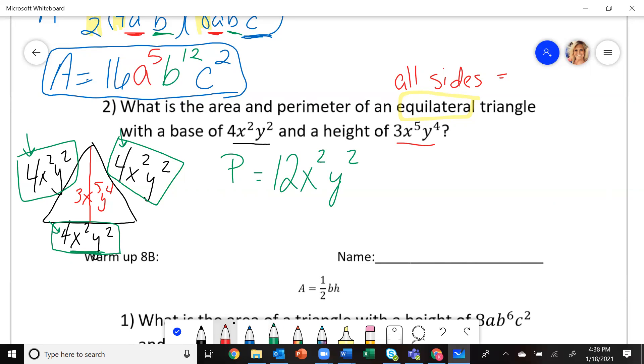Now, this is different than your area, because remember, like the one we did before, area is 1 half times your base, which is this right here, 4X squared, Y times your height. That's why that's important, 3X to the 5th, Y to the 4th.